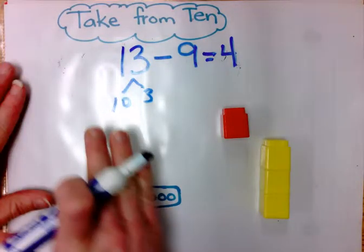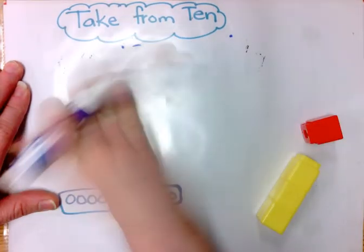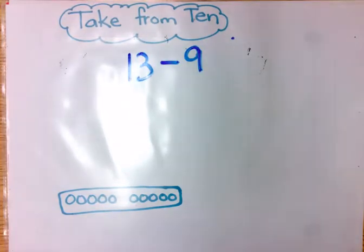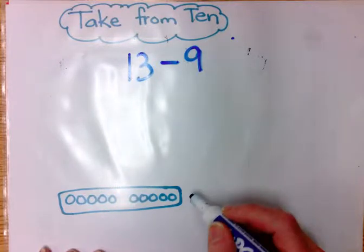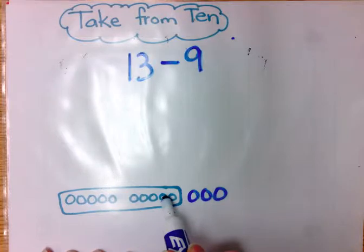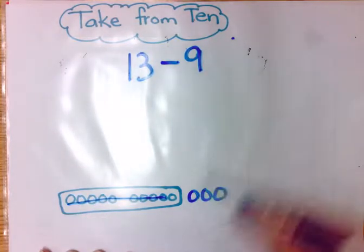We can do this with a picture as well. So let's say we're doing the same number, 13 minus 9, the same subtraction sentence. I can imagine my 10 and 3 more. Let's take 9 from 10, and I see I have 4 left.